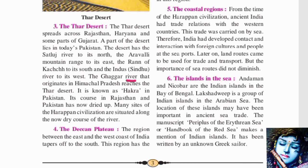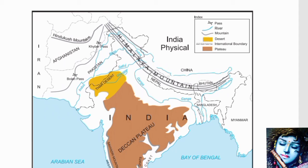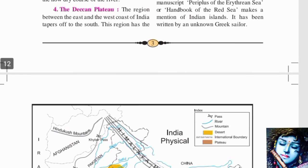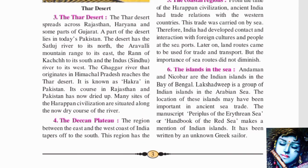The Ghaggar river that originates in Himachal Pradesh reaches the Thar Desert. In Pakistan, it is known as the Hakra river. Its course in Rajasthan and Pakistan has dried up — when it enters the Thar Desert, it gets soaked into the desert sand because there is so much sand that it absorbs the water.